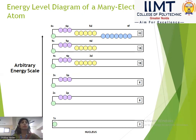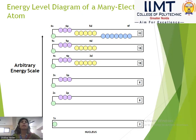In 3p, again we have 6 electrons. 6 plus 2 equals 8. Then in 4s, 2 electrons. 4p, we have 6. And 3d, we have 10. 10 plus 6 plus 2 equals 18. Next, 5s has 2 electrons, 5p has 6 electrons, and 4d has 10 electrons, giving 18 electrons.